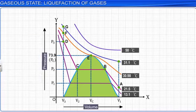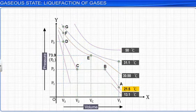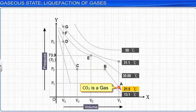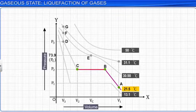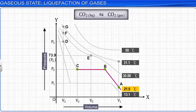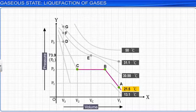Observe the isotherm at 21.5 degrees Celsius. At low pressure, carbon dioxide exists as a gas at point A. On increasing the pressure, the volume of the gas decreases along curve AB. The liquefaction of the gas starts at point B, and continues along BC, which is evident by the sudden decrease in the volume. Both liquid and gaseous carbon dioxide coexist in equilibrium along the line BC. At point C, the liquefaction is complete, and the increase in the pressure has little effect on the volume. This is because liquids are very less compressible. So, a steep curve CD represents only liquid carbon dioxide.